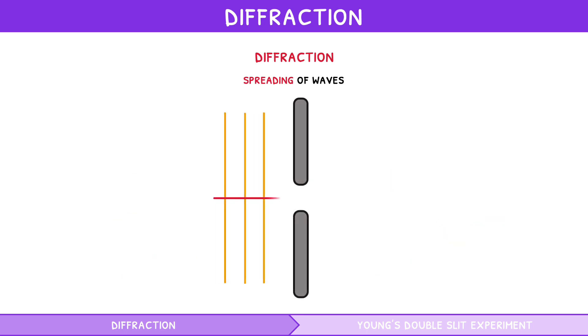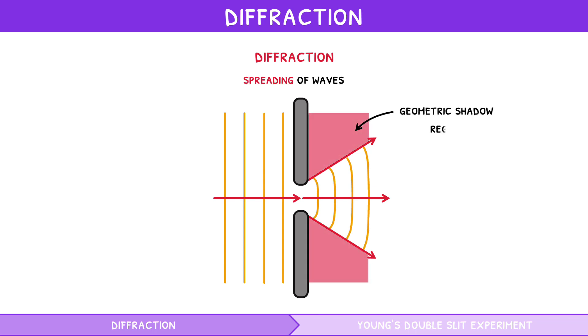When a wave passes through a small gap, known as a slit, the wave spreads out. The area where diffraction occurs is behind the obstacle, also known as the geometric shadow region. The key takeaway is that the slit width must be equal to or smaller than the wavelength for diffraction to be noticeable.